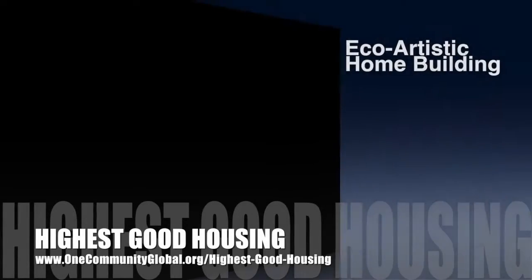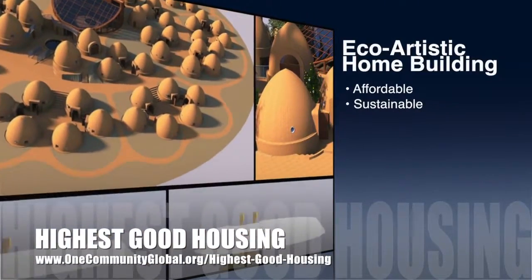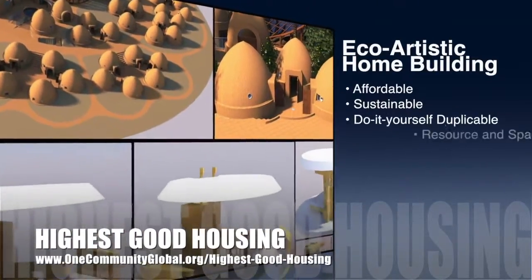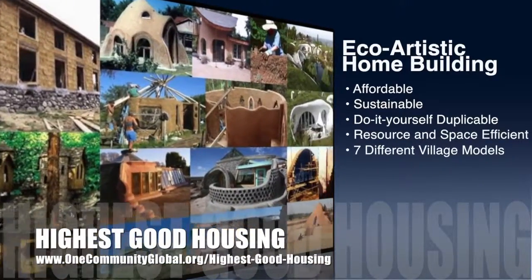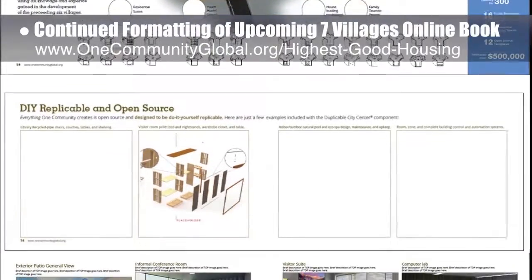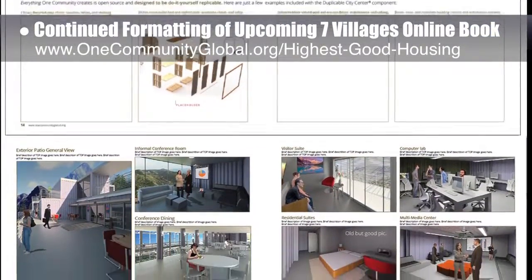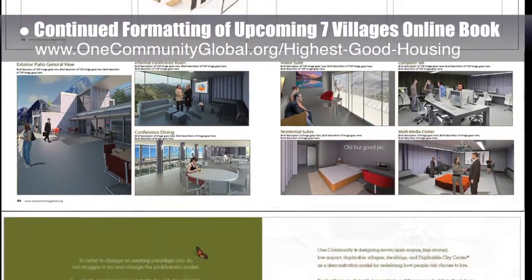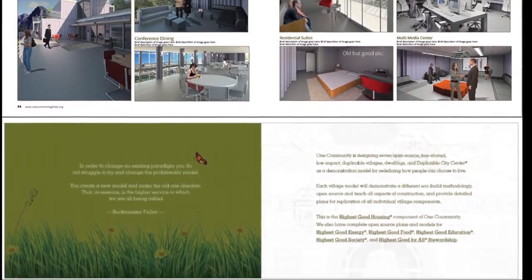The One Community approach to highest good housing is eco-artistic home building that is affordable, sustainable, do-it-yourself duplicable, resource and space efficient, and consists of seven different sustainably constructed village models. This week, the core team continued updating the formatting of the pages for the upcoming Seven Villages online book. This week's work focused on creating a new Treehouse Village Pod 7 layout and more revisions in layout and formatting updates for the duplicable city center and shipping container village Pod 5 pages.